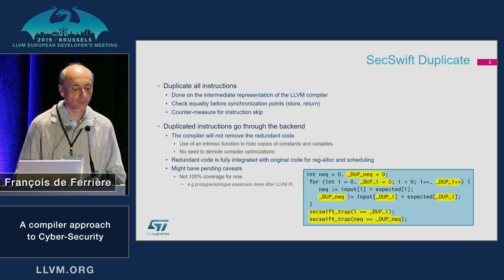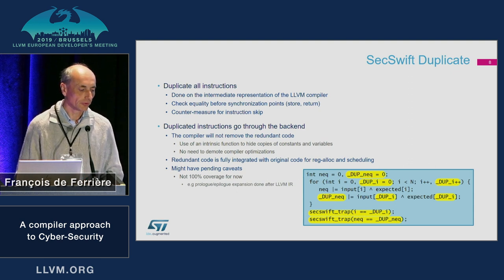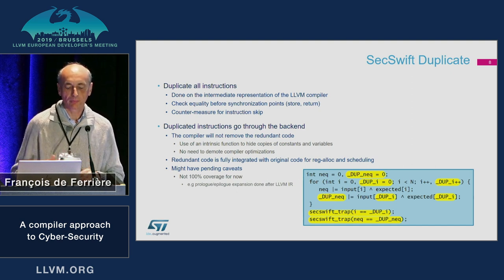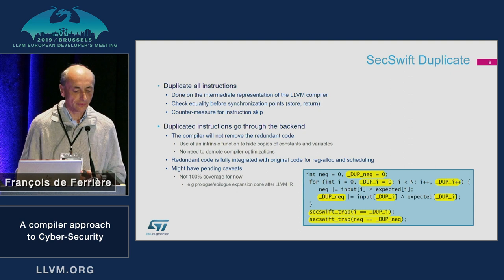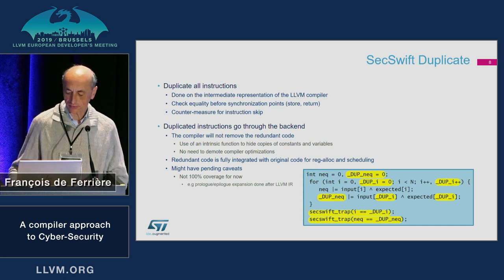We use intrinsic functions and pseudo-operators to hide a copy. The code will be fully optimized by register allocation and code scheduling. There still remains some code that is not protected because our implementation is at the middle end level — some code is generated later in the backend, notably for the prologue and epilogue instructions, which are not currently protected by our implementation.